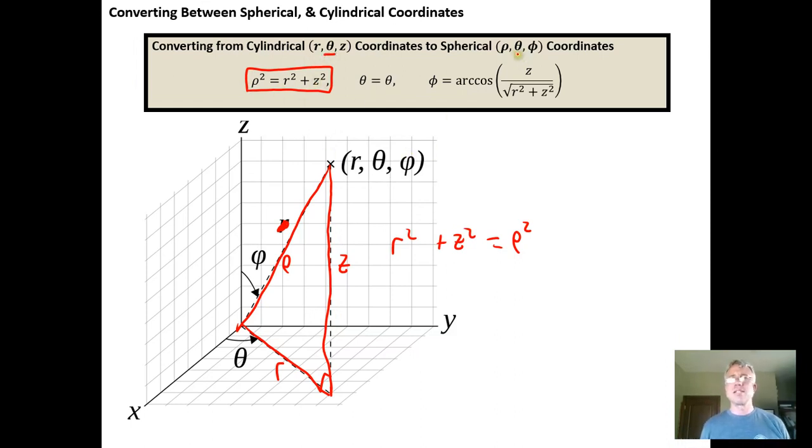Again θ is the same angle so θ always equals θ. And here this just comes from using this right triangle and understanding that this angle is φ or this angle we could also label as φ.